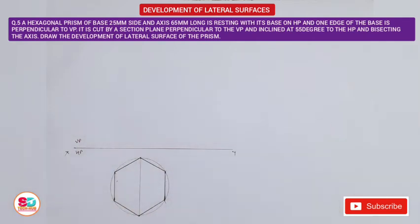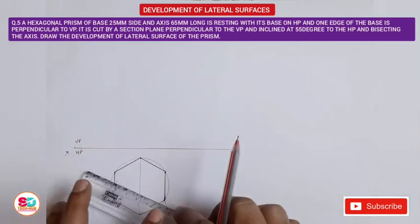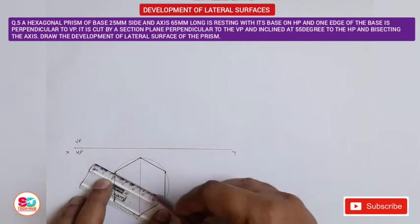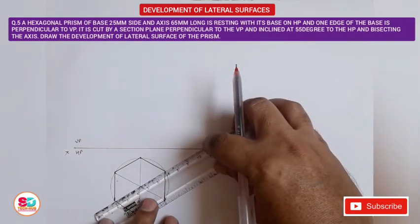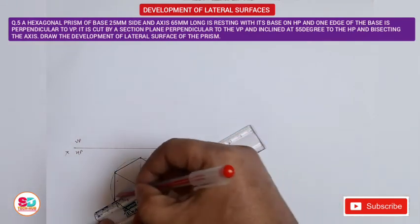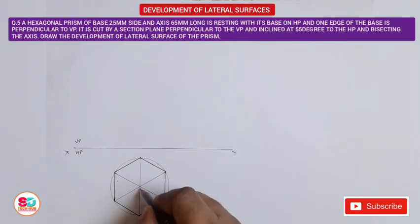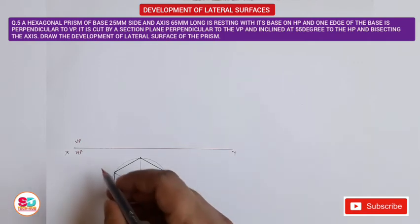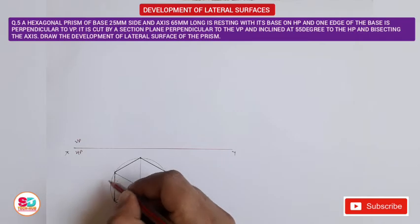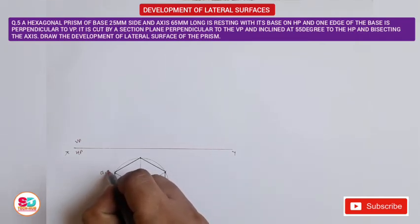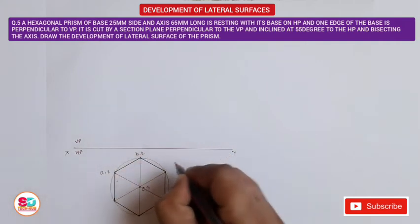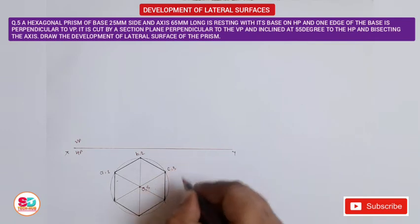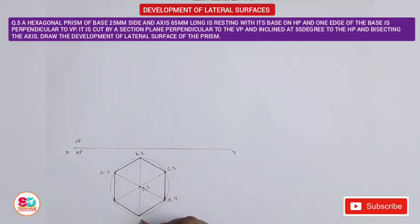We join opposite corners with lines so their diagonals intersect at the center, representing the axis. This intersection point is O (top) and S (bottom). The top surface corners are named 1 through 6, and the bottom surface corners are named A through F.